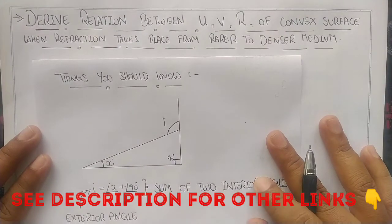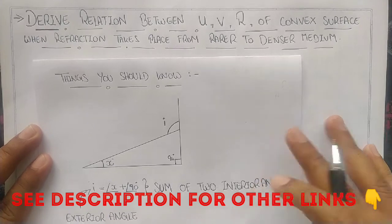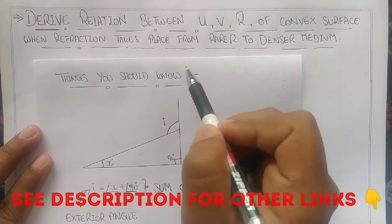Hello guys, welcome to my channel. Today we are moving forward with another derivation, finding the relationship between U, V, and R for convex surface.